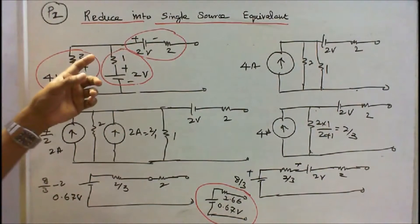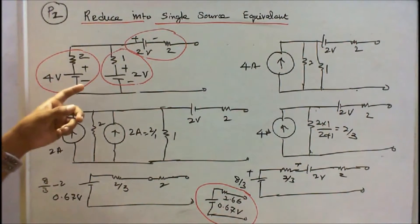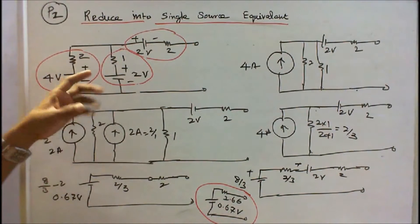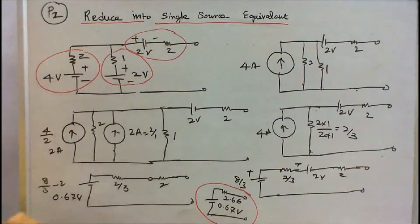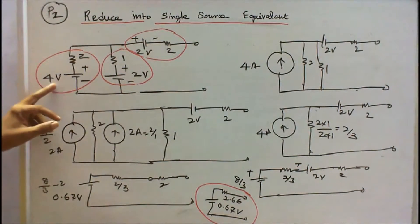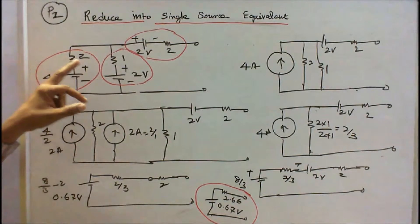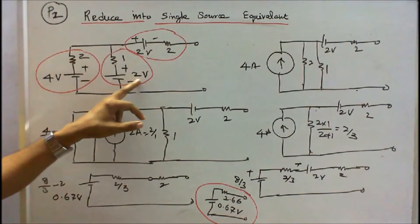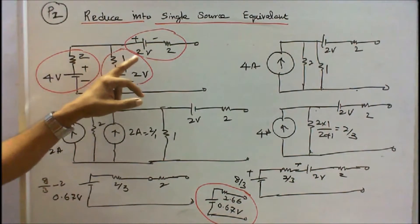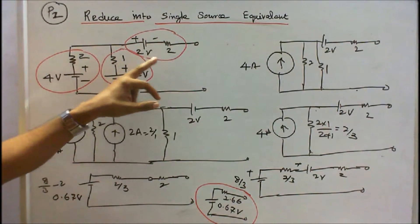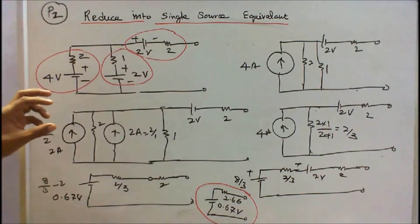Problem number 2. This is a given network I have to convert into a single source equivalent. This is 4 volts with 2 ohms, this is 2 volts with 1 ohm, this is 2 volts with 2 ohms, and this is 2 volts with 2 ohms.